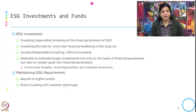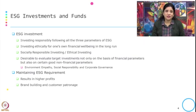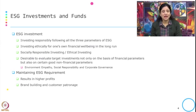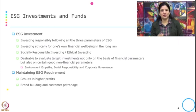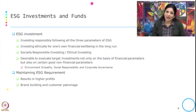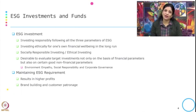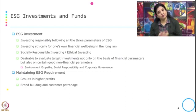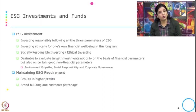To start with, ESG investment and funds — we have already discussed this when talking about sustainability reporting. ESG investment is investing responsibly following all three parameters of ESG: environment, social, and governance. It can also be investing ethically for one's own financial well-being in the long run. This is also known as socially responsible investment and ethical investment. It is desirable for organizations and corporates to evaluate target investments not only on financial parameters but also on non-financial parameters like environmental empathy, social responsibility, and corporate governance.